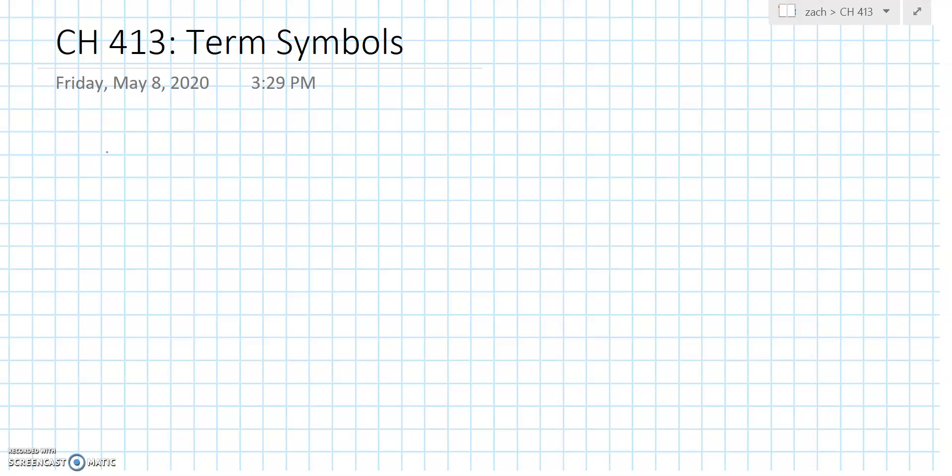What exactly is a term symbol and why is it important? We can essentially summarize three of the quantum numbers by having this term symbol, which looks like 2S+1, this fancy looking L with the serifs, and then a subscript J.